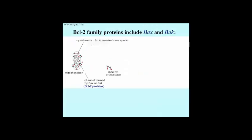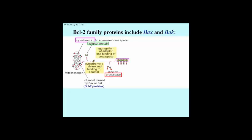The BCL-2 family of proteins includes BAX and BAK. These two proteins interact with mitochondria to form a channel through which cytochrome C can diffuse out of the mitochondrion. Recall that cytochrome C is part of the electron transport chain, oxidizing carbohydrates and fatty acids in mitochondria. After leaving the mitochondrion, the cytochrome C combines with a cytoplasmic adapter protein, shown here as the green notched box in this cartoon, and the activated adapter proteins associate with each other and with multiple procaspase proteins.